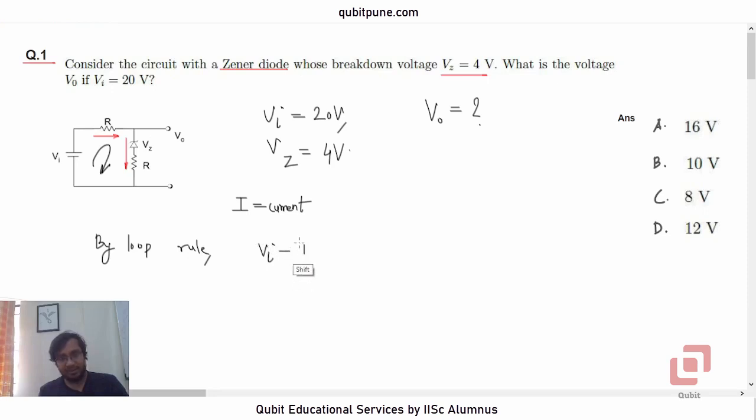Vi minus current I into R minus Vz, because it is connected in the reverse bias condition always, zener diode. And again minus IR is equal to 0. Correct.